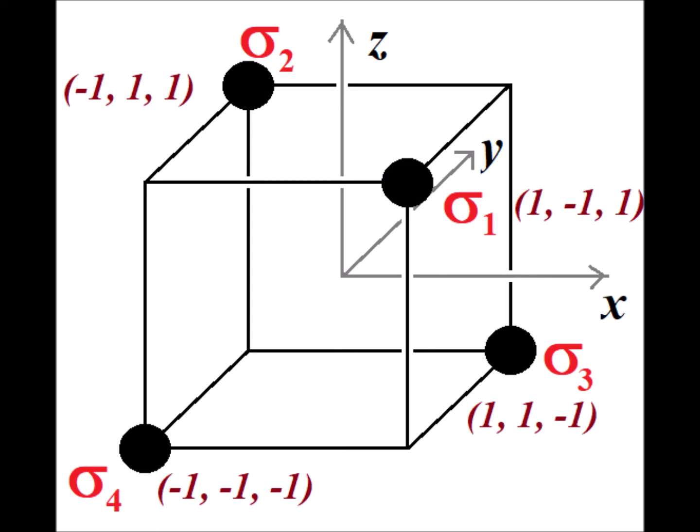Let us first note that methane belongs to the point group Td, the tetrahedral group. The tetrahedral group is a cubic group, so we can plot the positions of the hydrogen atoms in methane at the corners, the opposite corners in fact, of a cube as shown in the figure on the screen.